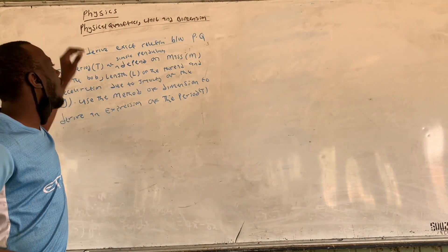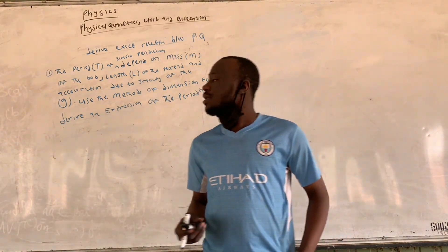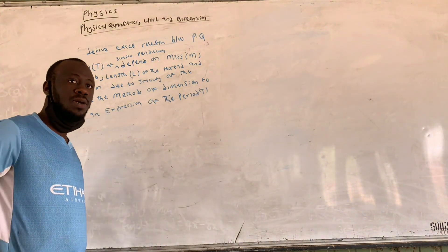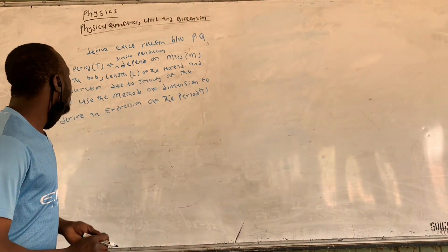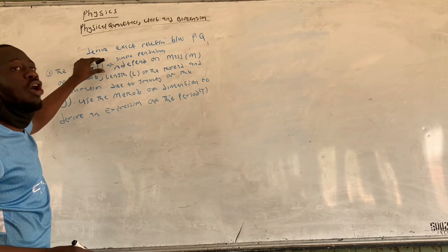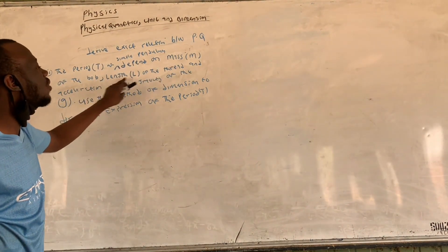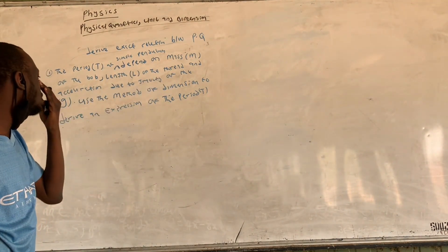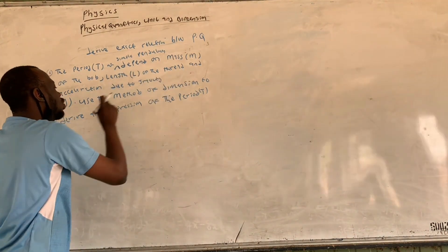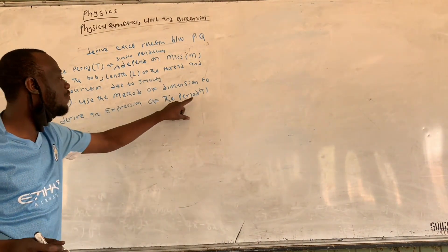We are going to use the third application of dimensional analysis, which is to derive an exact relationship between major physical world quantities. The question says: the period of a simple pendulum depends on the mass of the bob, the length of the thread, and the acceleration due to gravity. Use the method of dimensions to derive an expression for the period T.